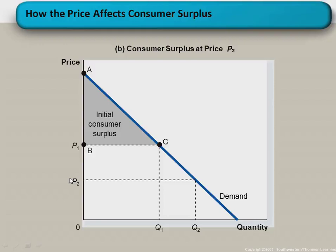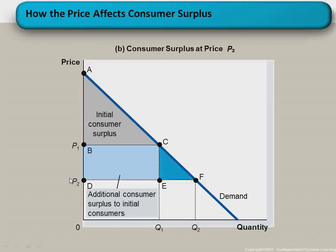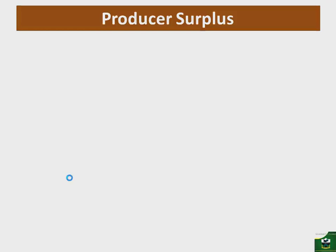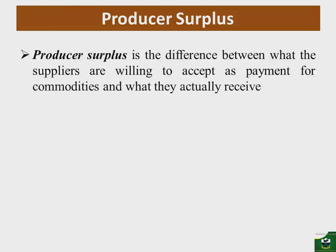We need to look at what surplus will accrue to both new and incumbent consumers. The area BCDE defines the new consumer surplus that accrues to the old consumers — this is the additional consumer surplus to the initial consumers who were already in the market. Those who have just joined the market will get triangle CEF, which becomes the consumer surplus for the new consumers.